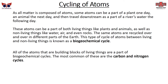In the same way that we cycle energy, we also cycle atoms — the matter itself. Since all matter is composed of atoms, some atoms can be part of a plant one day, an animal the next, and travel downstream as part of a river the following day. These atoms can be part of living things like plants and animals, as well as non-living things like water, air, and rocks. The same atoms are recycled over and over in different parts of the Earth. This cycle of atoms between living and non-living things is called the biogeochemical cycle, and the most common examples are the carbon and nitrogen cycles.